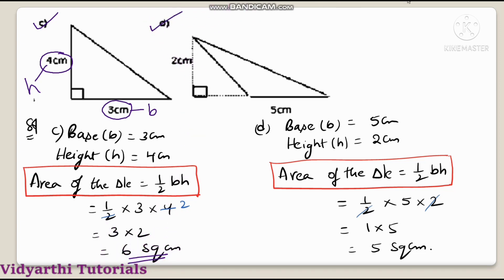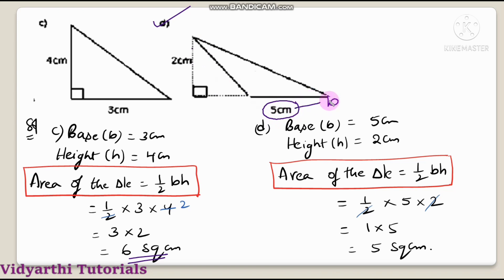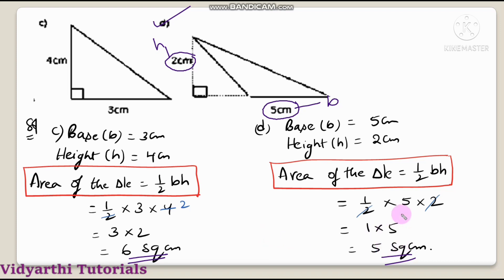Next, figure D. The base is 5 centimetres and height is 2 centimetres. Area of the triangle = ½ × 5 × 2. The 2 cancels out, giving 1 × 5 = 5 square centimetres.